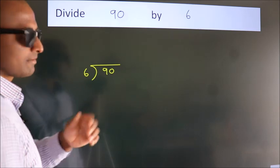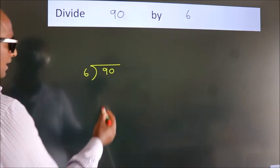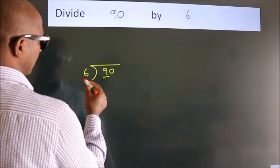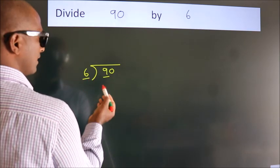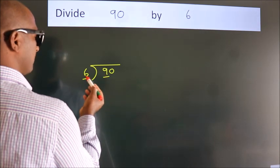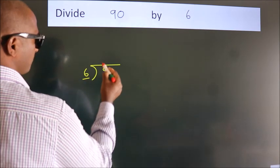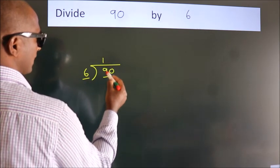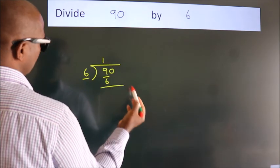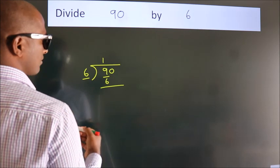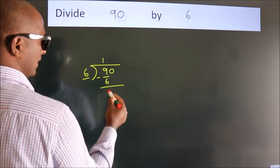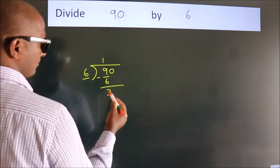Next, here we have 9, here 6. A number close to 9 in the 6 table is 6 once 6. Now we should subtract. We get 3.